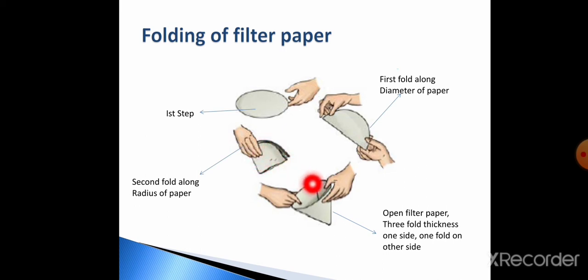After that, open the filter paper in such a way that filter paper has three-fold thickness on one side and one-fold thickness on the other side. This thing ensures that when we pour the mixture on filter paper, then we always pour, or in most cases, we pour the solvent on that side which has three-fold thickness. This thing avoids bursting of filter paper.